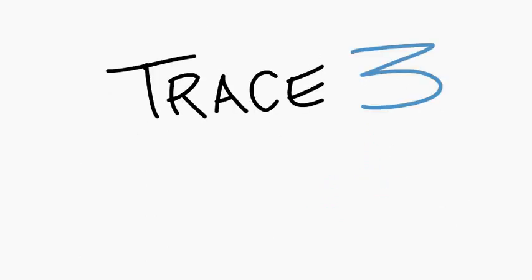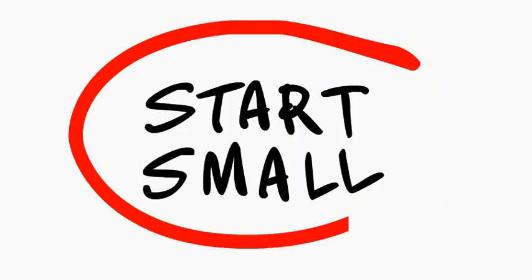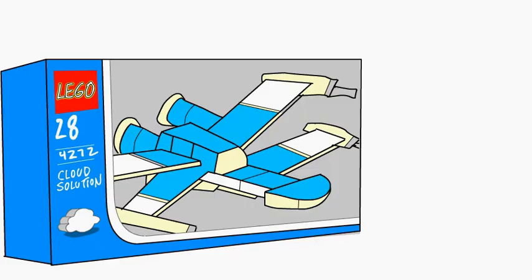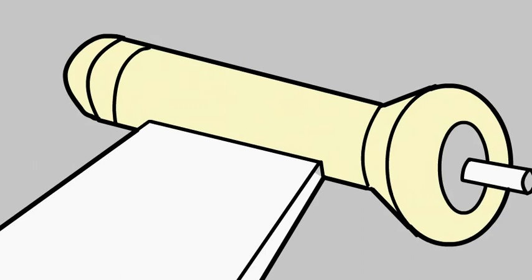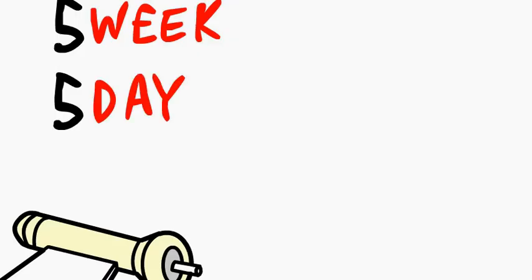At Trace3, what we like to do is, rather than stall, start small. Let's focus on one use case. For example, how do we turn something like a complicated five-week, five-day, or even five-hour DevOps process into something that's more push-button?